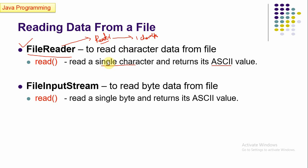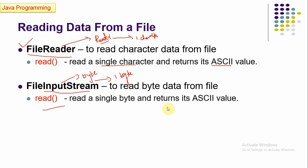If you want to read using a byte-oriented stream, you use the FileInputStream class. FileInputStream is a byte-oriented stream — it reads one single byte at a time. So the difference is: FileReader reads two bytes at a time, while FileInputStream reads one byte at a time. FileInputStream also has a read() method that reads a single byte and returns its ASCII value.